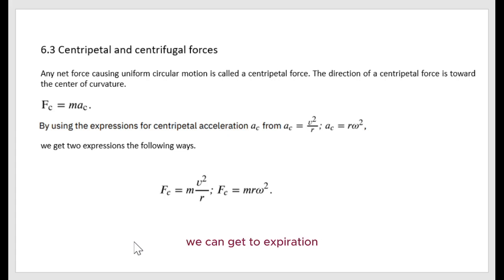We can get two expressions for centripetal force the following way. Fc equals mac equals m times velocity squared divided by radius, or mass times r times angular velocity omega squared.